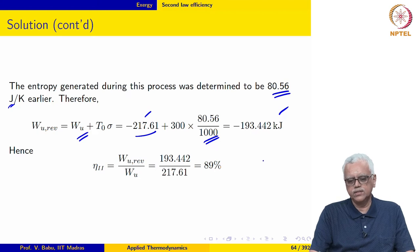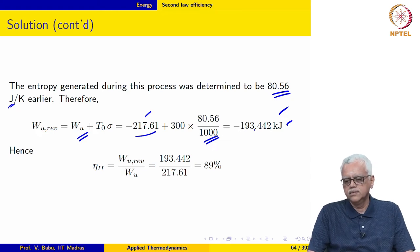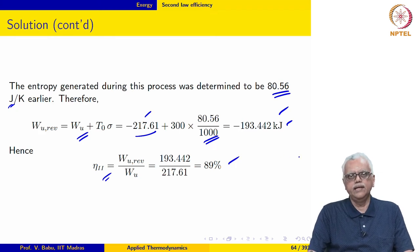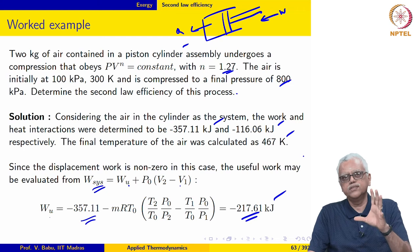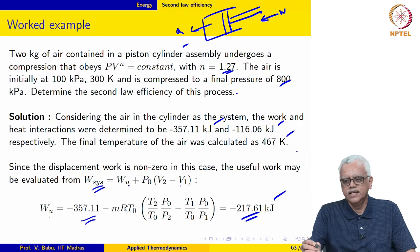The actual work that is required is minus 217.61 kilojoules. Had the process been carried out reversibly, the work that would have been required is minus 193.442 kilojoules. So the second law efficiency, W_u reversible divided by W_u actual, comes out to be 89%. You can see the importance of the concept of exergy and how it is used to evaluate efficiency for a non-flow process like this.